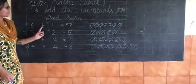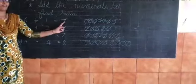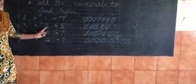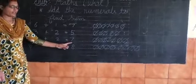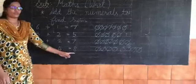See? Six plus one is equal seven. Three plus two is equal five. Five plus two is equal seven. Four plus four is equal eight.